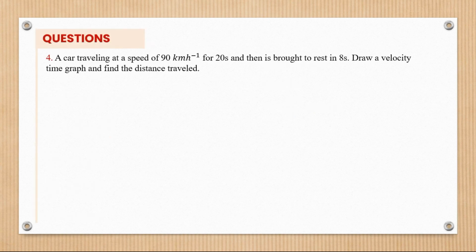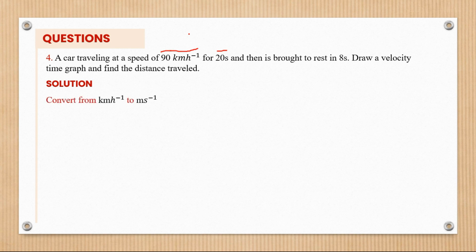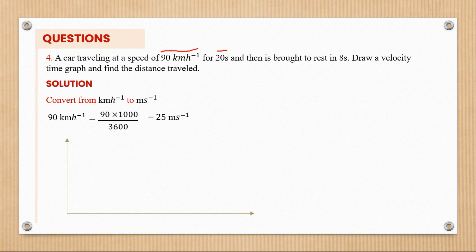Question 4: A car traveling at 90 km/h for 20 seconds is then brought to rest in 8 seconds. First convert 90 km/h to m/s: 90 × 1000/3600 = 25 m/s. The car is not starting from rest, so the velocity-time graph starts at 25 m/s. The car travels at 25 m/s for 20 seconds (distance S1), then decelerates to rest in 8 seconds (distance S2).